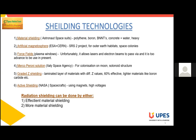Now, graded-Z shielding. Graded-Z shielding is a laminate of several materials with different Z values, where Z represents the atomic number. The same mass of graded-Z shielding has been shown to reduce electron penetration by over 60 percent. It is used in satellite-based particle detection.